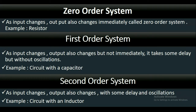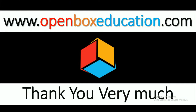The second-order system: as the input changes, the output also changes with some delay but with oscillations. An example is a circuit with an inductor. So this is about the order of the system of an instrument. Thank you very much for watching. To watch more videos, please subscribe to my channel, Open Box Education.